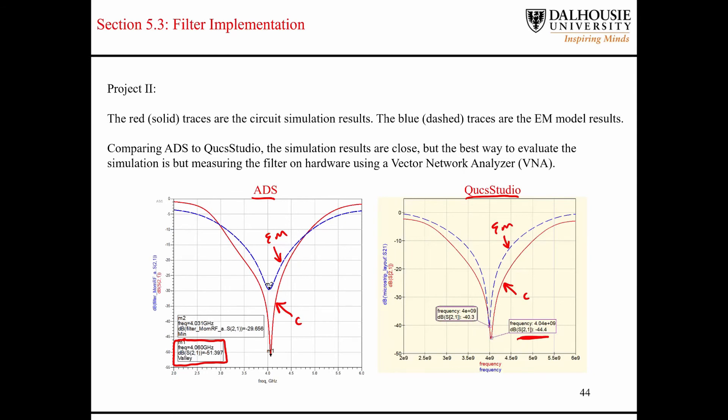The EM simulation results are quite a bit different, though. Over here in QUCS Studio, we have our minimal point right at 4 gigahertz. But the magnitude of our S21 parameter is minus 40 dB, where, by comparison, we're at minus 29 dB over here in ADS.